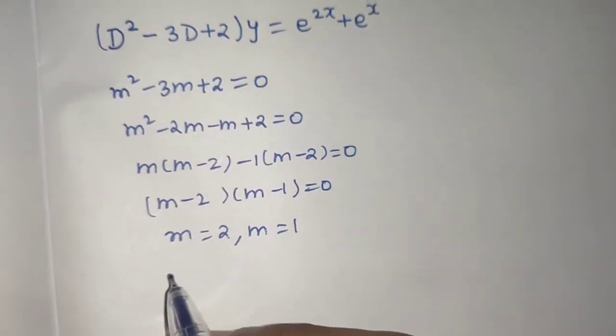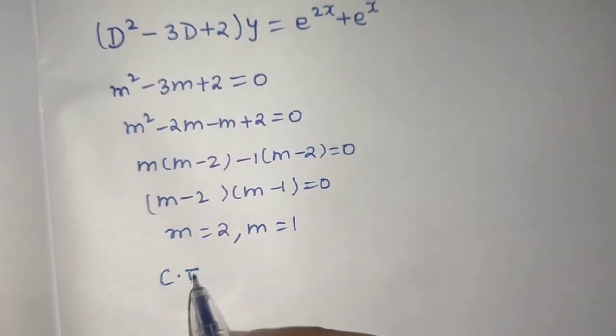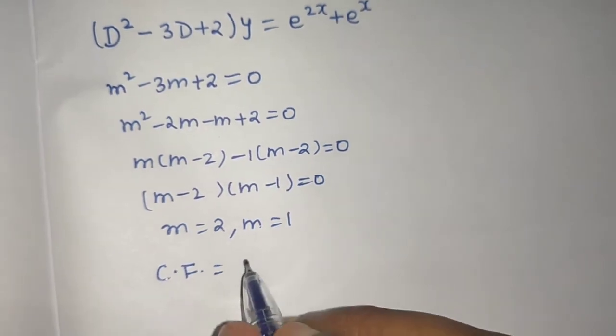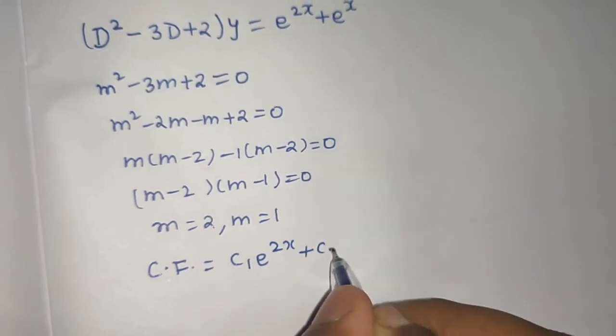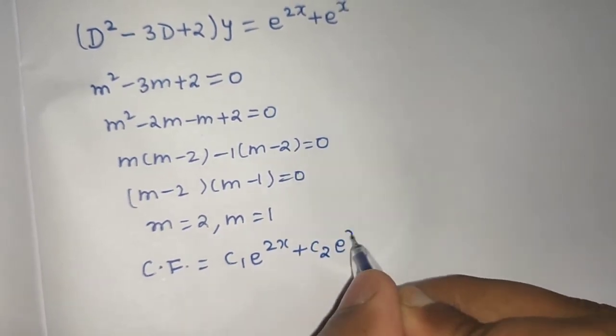So roots are real and distinct. So you know the complementary function can be written as C₁e^(m₁x) plus C₂e^(m₂x). This is your complementary function.